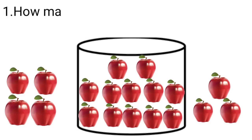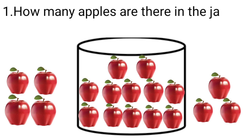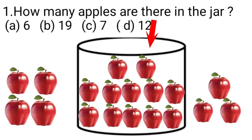Here is the first question. How many apples are there in the jar? We have four options here. Option A is 6, option B is 19, option C is 7 and option D is 12. This is a jar kids. This is the inside part and that is the outside part.